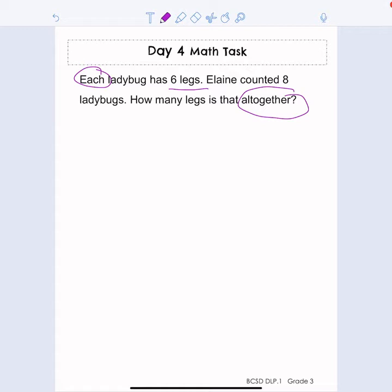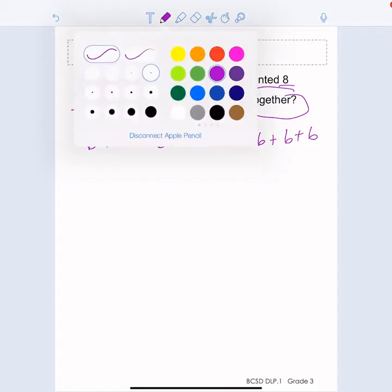So we're going to do six legs. We're going to write the number six and it says that Elaine counted eight ladybugs. So that means I'm going to write the number six eight times. So here we go. One, two, three, four, five, six, seven, eight. That was a lot of sixes. Let me just double check. I always have my students double check because it's easy to lose track of how many times you've written the number.